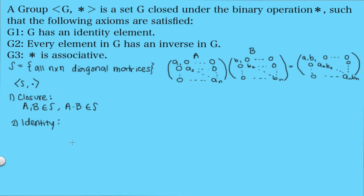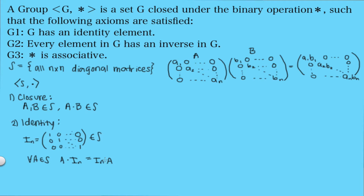The next thing is the first axiom: the set must have an identity element. The identity element for matrices is the identity matrix, which is a diagonal matrix and therefore in our set S. We call this Iₙ, with ones along the diagonal. For all A in S, A times Iₙ equals Iₙ times A, which equals A. So this does have an identity element.